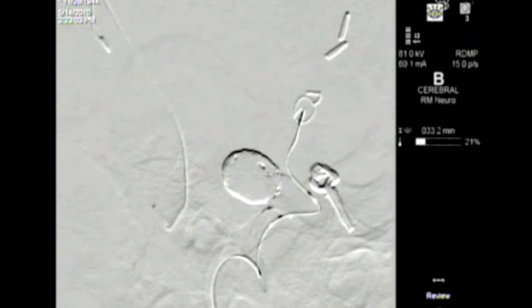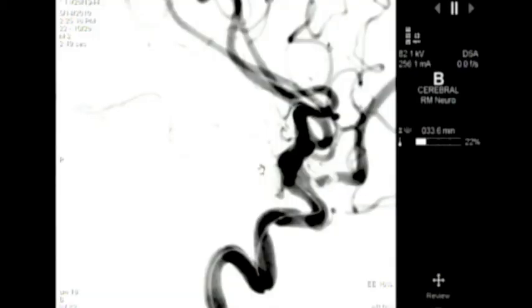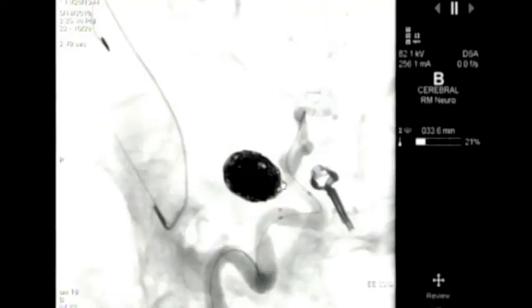Here is the last coil going into the aneurysm. Here is the final picture after the coil embolization. You can see the aneurysm is completely coiled and the parent vessel is completely patent.